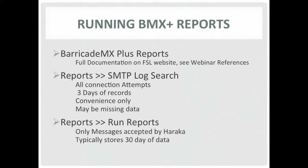Let's review the two types of Barricade MX reports available. The first report type is accessed by navigating to Reports > SMTP Log Search. This page fronts a special database containing limited information on all connections to Port 25 made during the last three days — whether accepted, dropped, or returned. It's for convenience only and is not guaranteed to be complete; records will be overwritten if the same sender sends a later message to the same recipient from the same IP address.